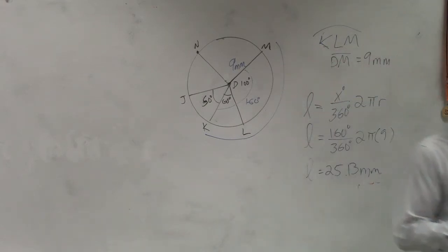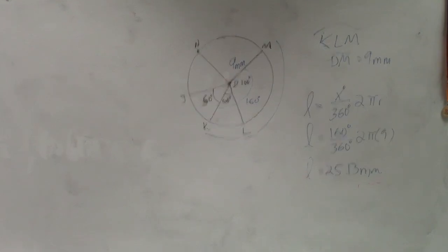Since we're dealing with distance, it's just going to be millimeters, not millimeters squared, which would be for area, or millimeters cubed, which would be for volume. Does that make sense?